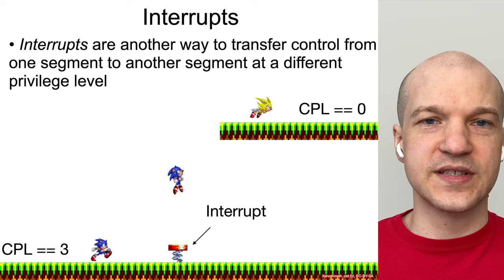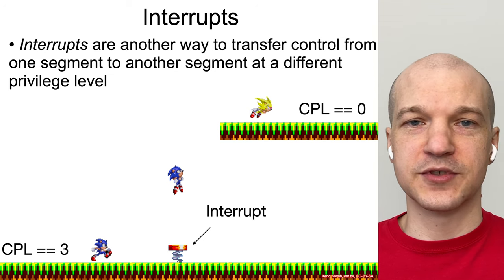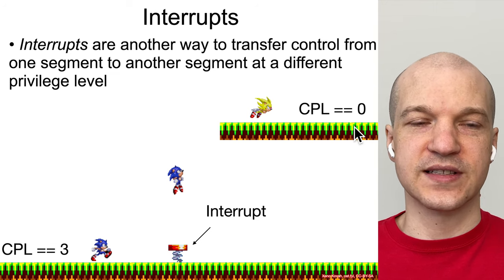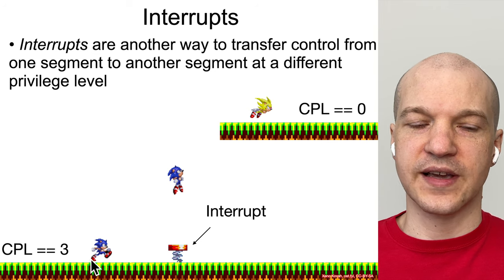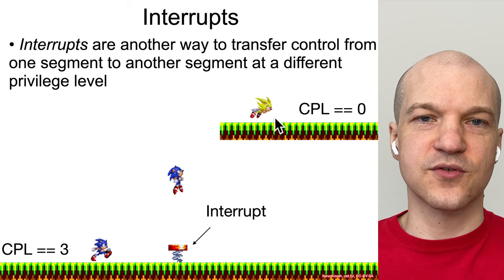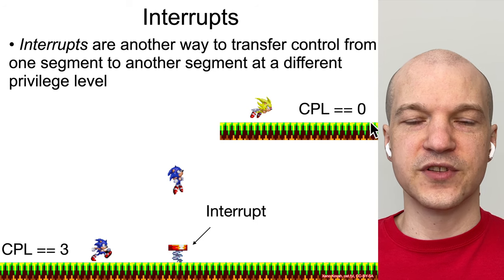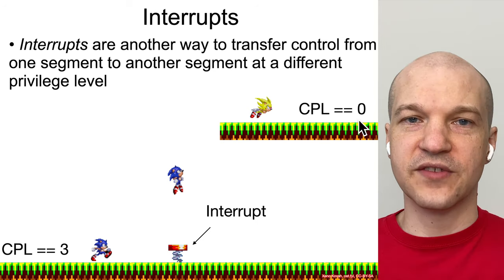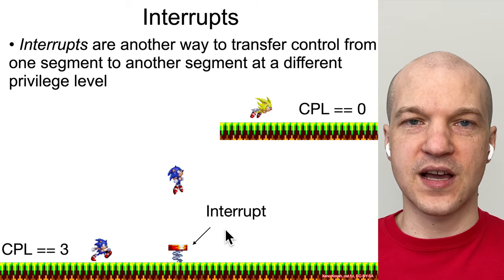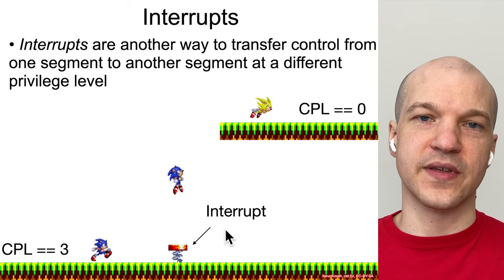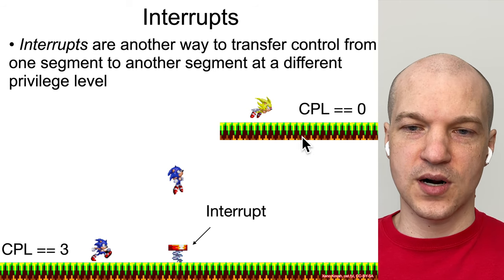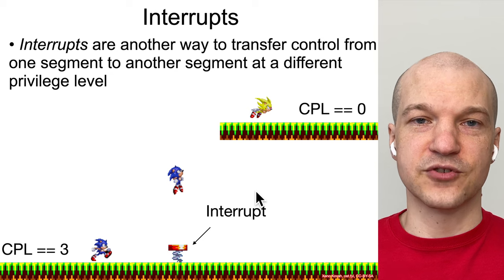Just like we saw with call gates back in the segmentation section, interrupts are another mechanism that can be used to perform privilege level escalation. Your code can be running at current privilege level 3, an interrupt occurs, and then it's going to break into the kernel and execute the kernel's interrupt handler at privilege level 0. This is actually a very common way that operating systems used to invoke their system call mechanism to go from user space explicitly into the kernel — it's not so common anymore, but it is a way for privilege level transfer to occur.